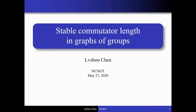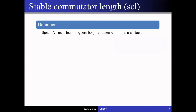This is a talk in the Hyperbolic Geometry and Manifolds session of the NCNGT conference. Today I will talk about stable commutator length in graphs of groups. Let me start by telling you what stable commutator length is. Roughly speaking, it is a minimal complexity of surfaces bounding a given loop in a space.